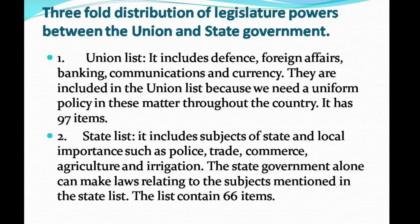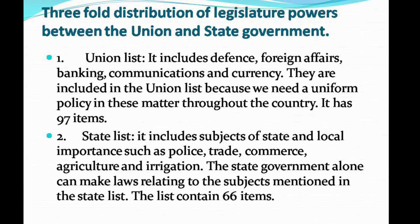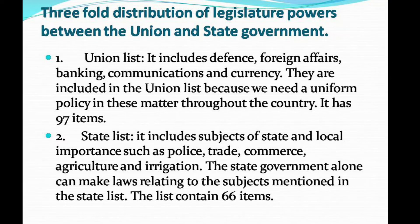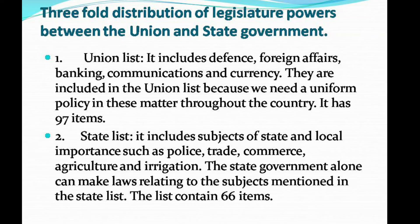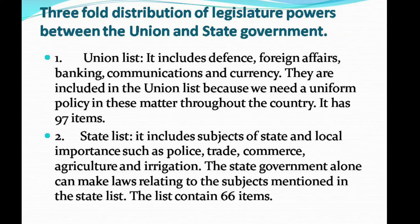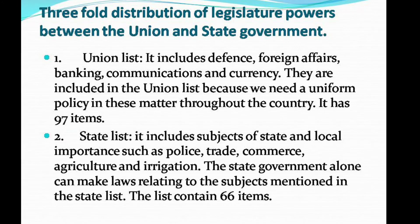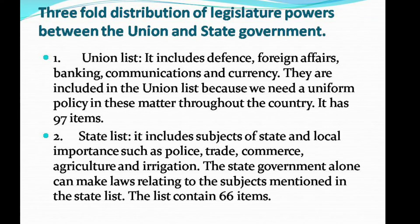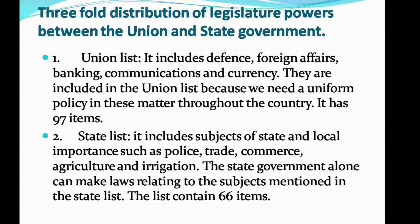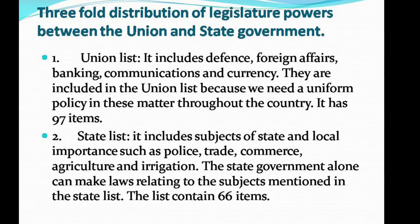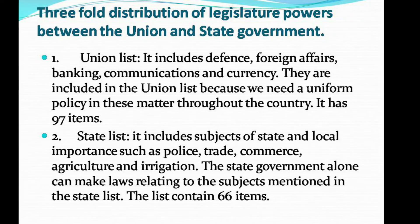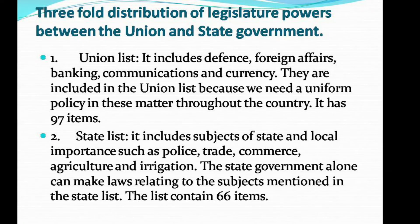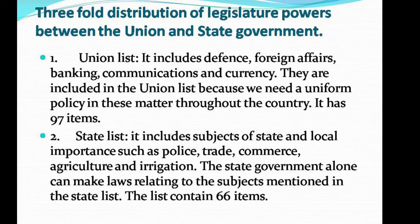The Union List has 97 items. The State List includes subjects of state and local importance such as police, trade, commerce, agriculture, and irrigation.